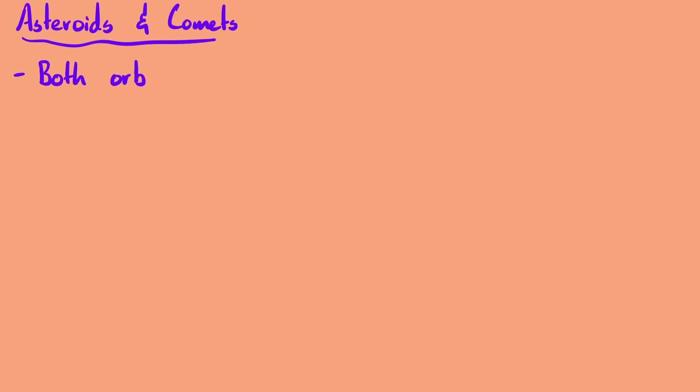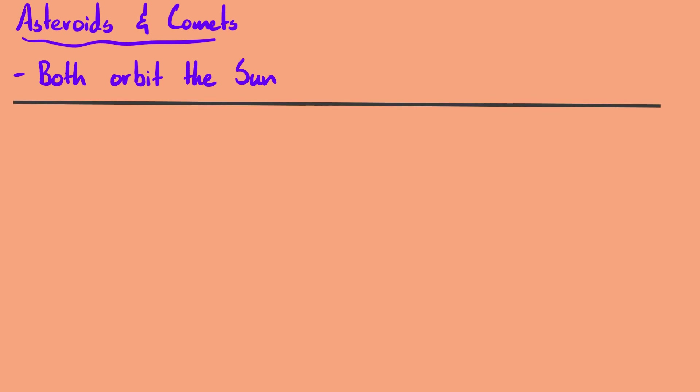Asteroids and comets have very few similarities. One similarity is that, like many other things in our solar system, both of these orbit the sun. And that's it — that's the only similarity. After this, you will see only differences between them. Let's study both side by side to make it easier to see the differences.